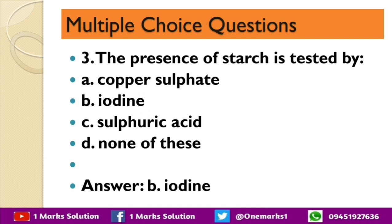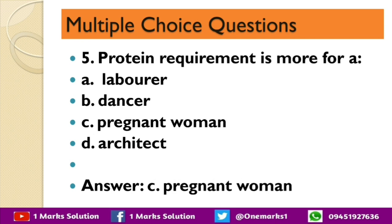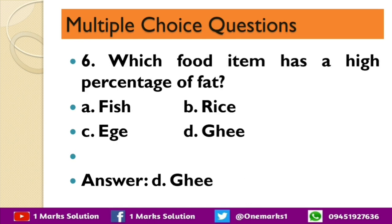The next question: the presence of starch is tested by — copper sulfate, iodine, sulfuric acid, or none of these? The correct answer is iodine. Proteins are present in — bones, blood, flesh, or all of these? The correct answer is all of these. Protein requirement is more for — a laborer, dancer, pregnant woman, or architect? The correct answer is pregnant woman.